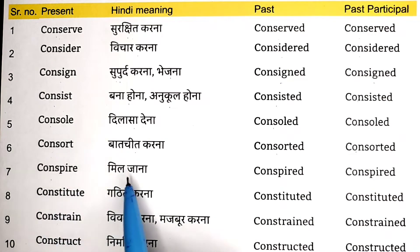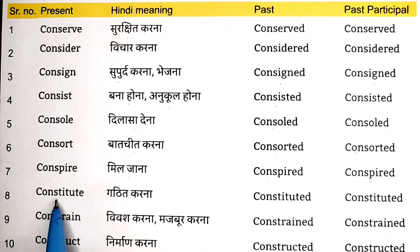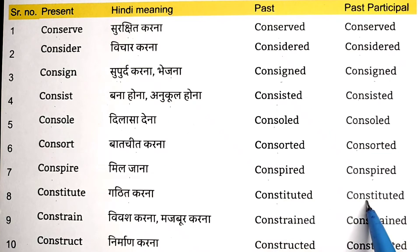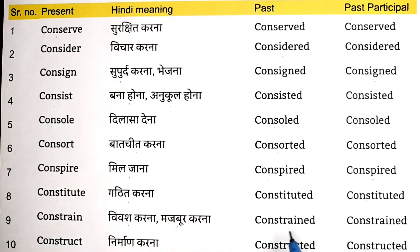Conspire means mil jana. Conspired, conspired. Constitute means gathit karna. Constituted, constituted. Constrained means vivaç karna ya majboor karna. Constrained, constrained.